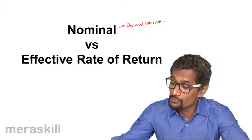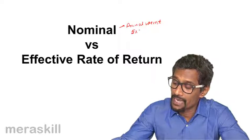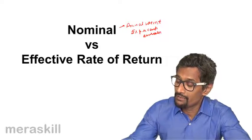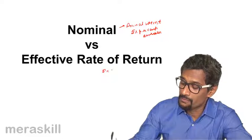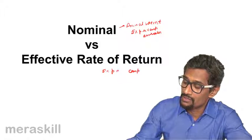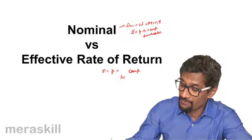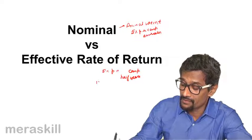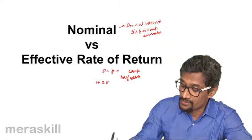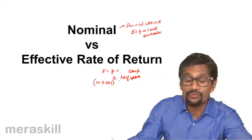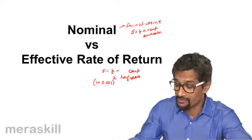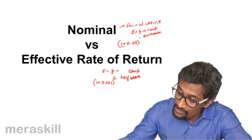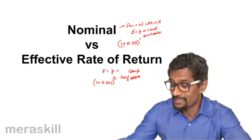So suppose in this case, annual interest rate was 5% per annum compounded annually. The same thing is 5% per annum compounded, say, half yearly. In this case, this will have the factor 1 plus 0.025 raised to 2 for every year. This would be 1 plus 0.05 raised to 1 for one year, which is not exactly the same.